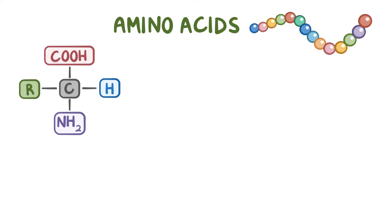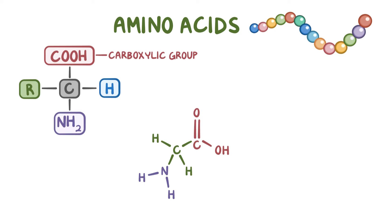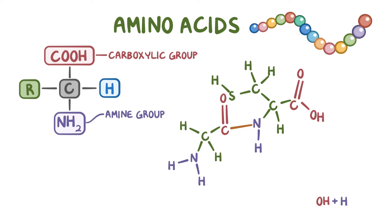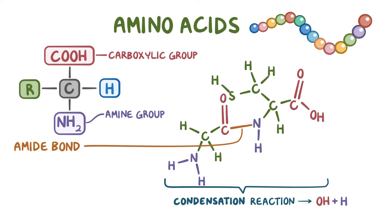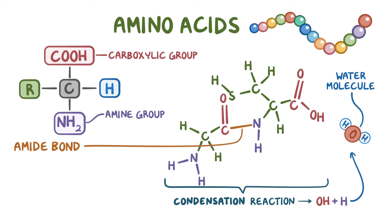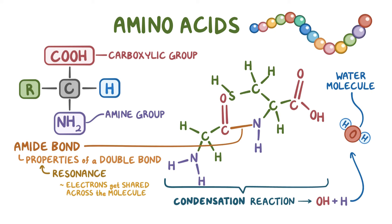For amino acids to link up in a chain, the carboxyl group of one amino acid has to bind to the amine group of another, creating a single peptide bond. This is a condensation reaction, meaning that two amino acids are basically smooshed together, and the OH from the carboxyl group along with one hydrogen from the amine group get released as a water molecule, in the formation of an amide bond. While technically being a single bond, it actually has the properties of a structurally stronger double bond, thanks to the property of resonance—where electrons get shared across the molecule, making peptide bonds stronger and more stable.